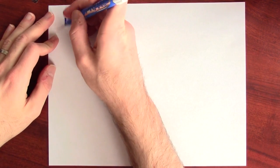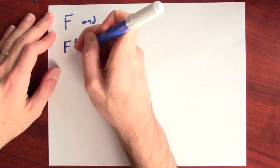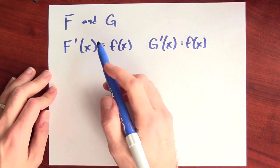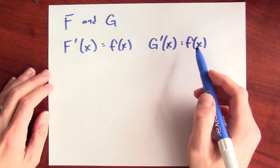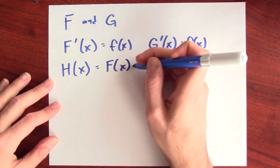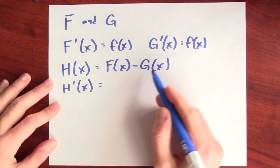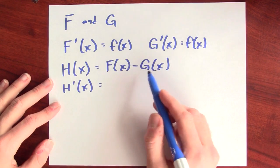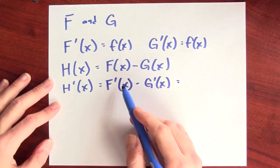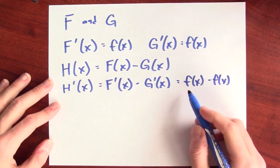Suppose I've got two antiderivatives, big F and big G, for little f. In other words, if I differentiate big F I get little f, and if I differentiate big G I get little f. I can define a new function big H = big F minus big G. The derivative of big H is the derivative of F minus the derivative of G, because the derivative of a difference is the difference of derivatives. The derivative of F is little f, the derivative of G is little f, so this is little f minus little f.